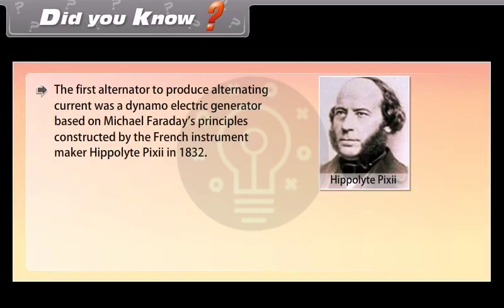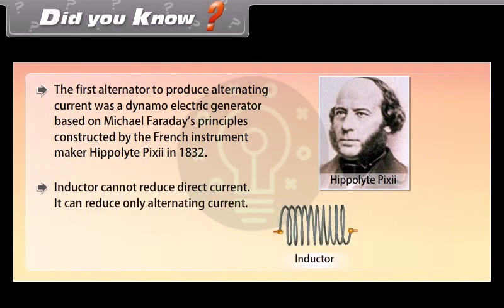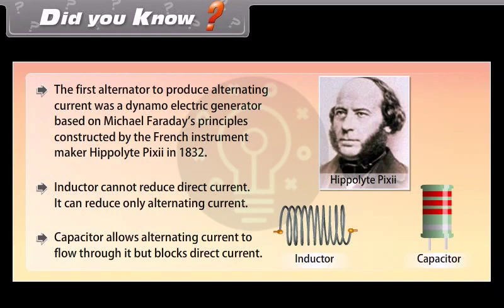Did you know? The first alternator to produce alternating current was a dynamo electric generator based on Michael Faraday's principles, constructed by French instrument maker Hippolyte Pixie in 1832. An inductor cannot reduce direct current — it can reduce only alternating current. A capacitor allows alternating current to flow through it but blocks direct current.